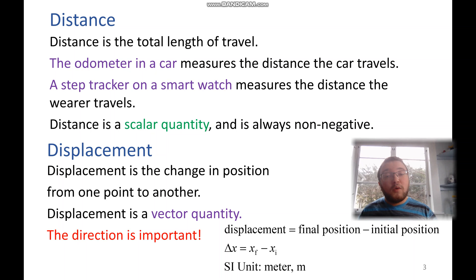This is different from displacement, which is the change in position. Displacement is a vector, which means that direction is important. 5 meters to the left is not the same as 5 meters to the right. Displacement we describe mathematically by saying delta x or the change in x displacement is equal to xf minus xi, your final position minus your initial position.